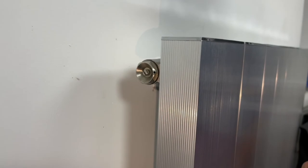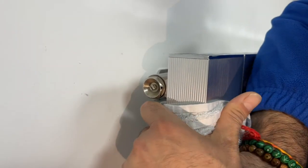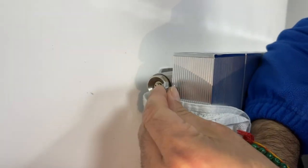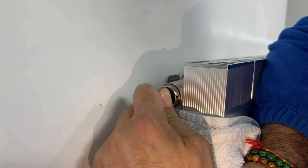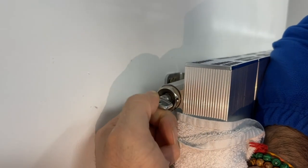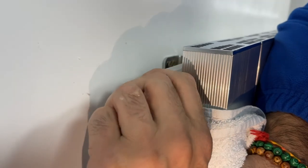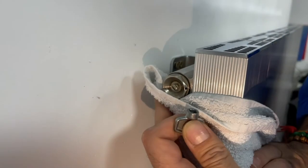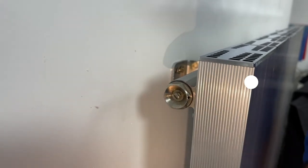On panel radiators, we need to make sure the radiator is bled until water comes out. Slowly turn and close. This radiator has no air left, so it's all bled and ready to go.